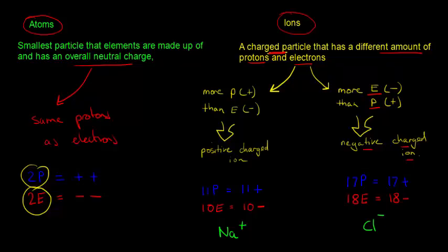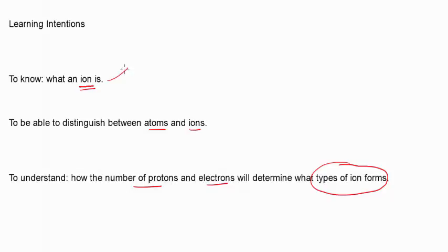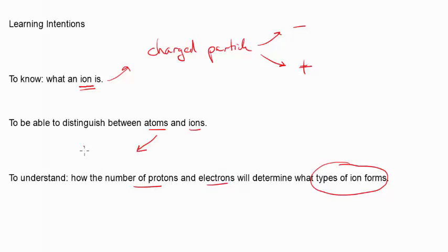Going back to our learning objectives: we want to know what an ion is — that was a charged particle, so not neutral but a charged particle — and we can either have a negatively charged particle or a positively charged particle. To distinguish between atoms and ions: atoms have no charge, which means they have the same amount of positive and negative particles — same number of protons as electrons. Ions do have a charge, so they either have more protons than electrons or more electrons than protons.